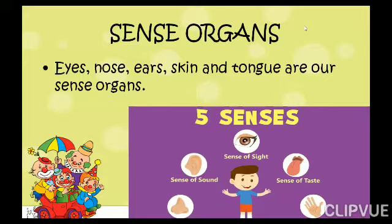Eyes, nose, ears, skin and tongue are our sense organs. Sense organs are different and senses are different. Eyes, nose, ears, skin and tongue — they all are organs. And what are the senses?